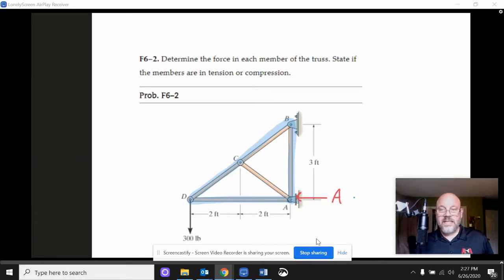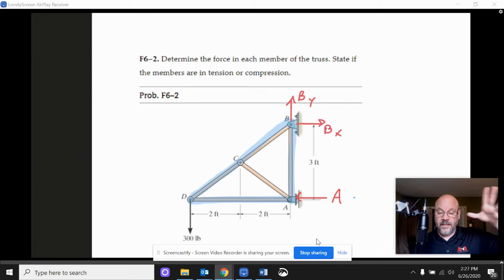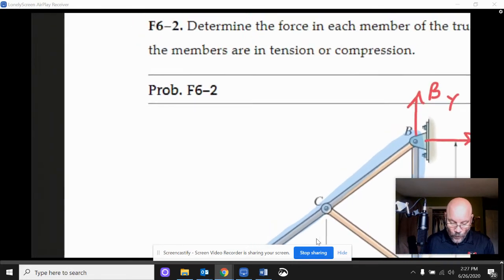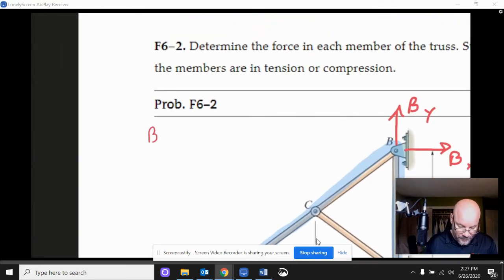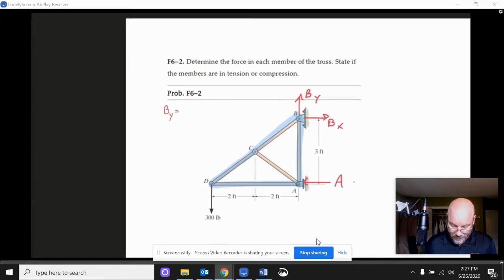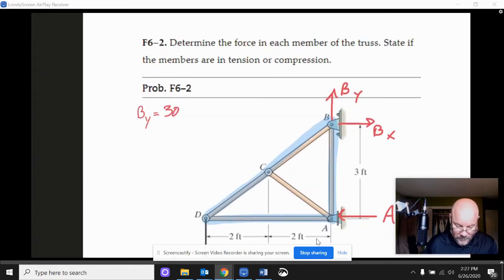And so if we go up to B, then B is going to have to counteract A. So we'll have a BX here, and then we're going to have here a BY value. And this one's pretty simple. Looking at the horizontal bits, looking at the vertical bits, we can see right away that BY has to be that 300 pounds.